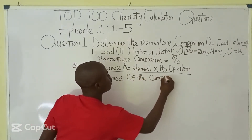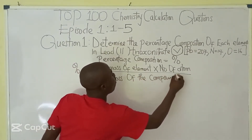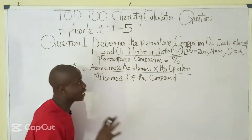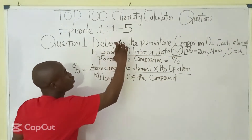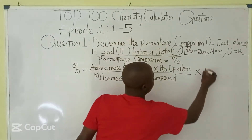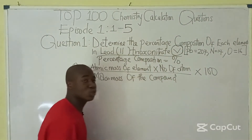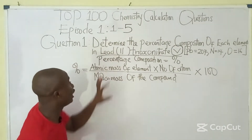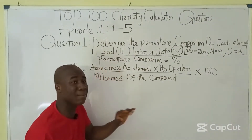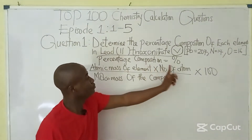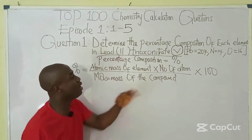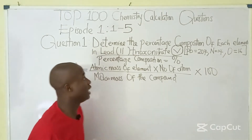In this particular question, the compound is lead(II) trioxonitrate(V). The formula is: atomic mass of elements in the compound times the number of atoms of that particular element, over the molar mass of the compound, times 100.